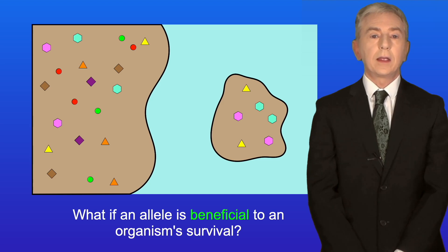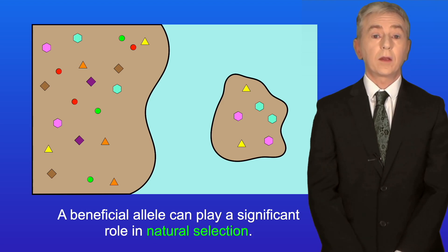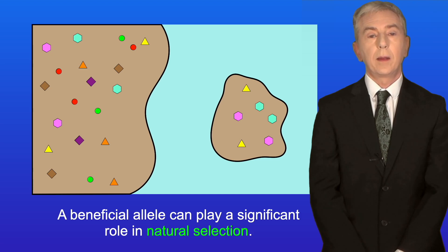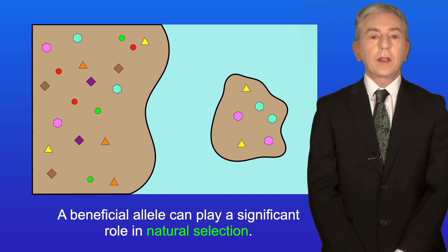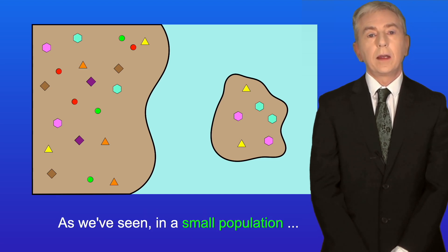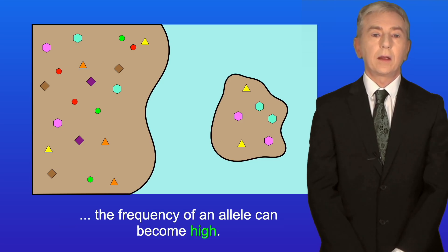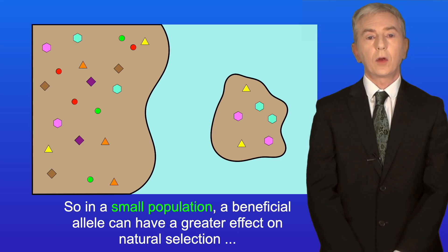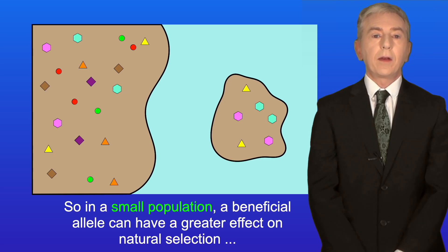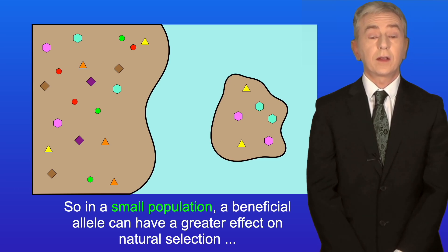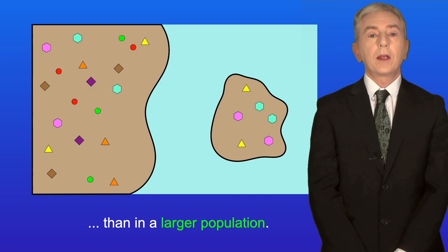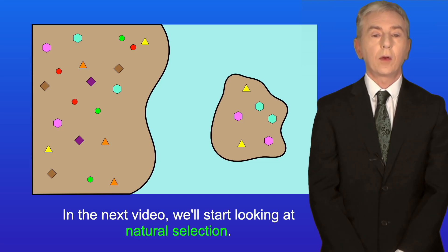If an allele is beneficial to an organism's survival, it can play a significant role in natural selection. As we've seen, in a small population the frequency of an allele can become high. So a beneficial allele can have a greater effect on natural selection in a small population than in a larger one. In the next video we'll start looking at natural selection.